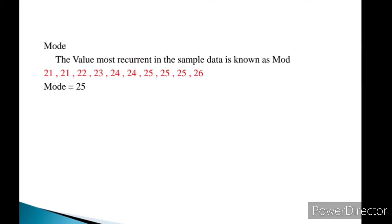Next we come to mode. For example, if we have data: 21, 21, 22, 23, 24, 24, 25, 25, 25, and 26 — if you have a set of data and need to find a value which is recurrent, that is the mode. Looking at this particular sample, the value 25 is repeated most often. So the mode of this sample data is 25.